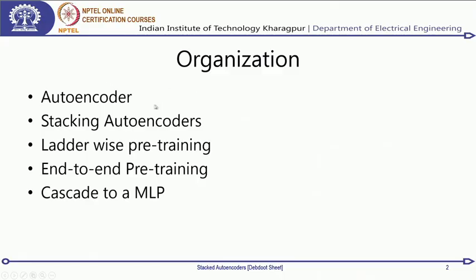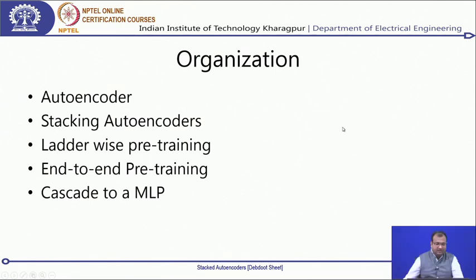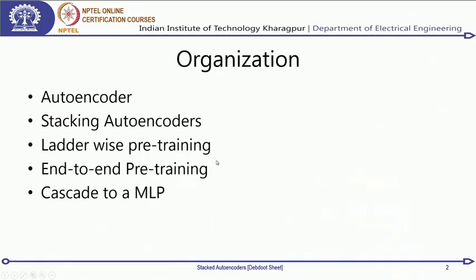Without much delay, let us get into what it is. I will be introducing the basic concept of auto encoder again, then speaking about what is called stacking of auto encoders, and something called ladder-wise pre-training. There are two basic options for auto encoder training. One method is ladder-wise pre-training, where you grow one hidden layer at a time. The other method is end-to-end pre-training, where you create the total auto encoder structure and train it in one single go.